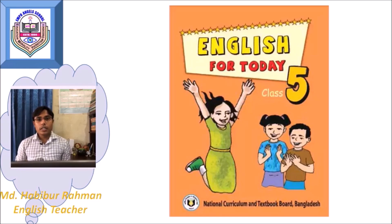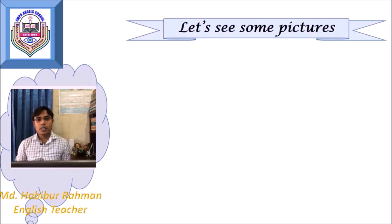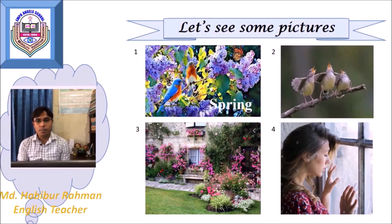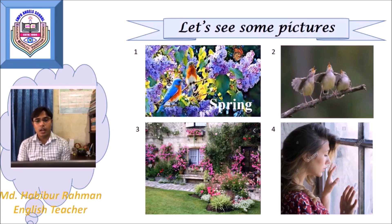Before we start our reading, let's see some pictures. Students, can you see the pictures? What can you see? In the first picture, there are a lot of flowers, birds, butterfly, and it's a delightful day of spring season. We know there are six seasons in Bangladesh and the spring season is the most beautiful of all. In the second picture, you can see some birds singing, and in the next picture, some blooming flowers are seen outside the room. Those three pictures contain the beautiful views of spring.